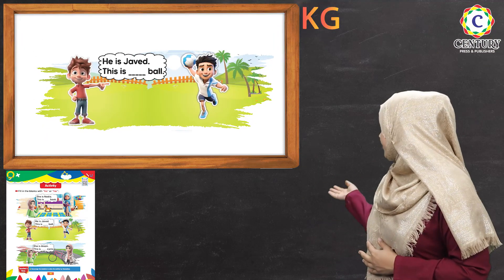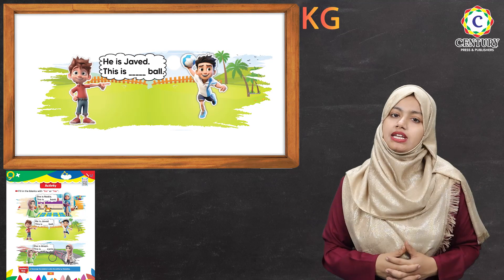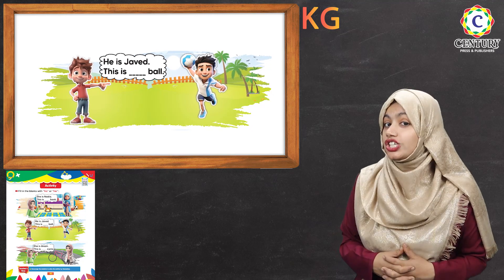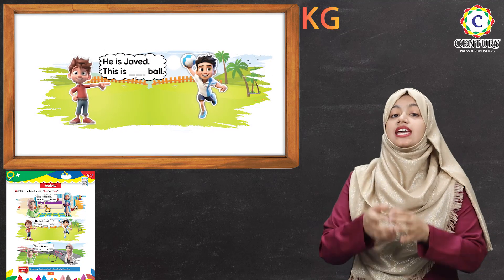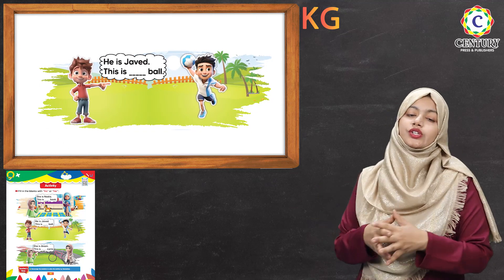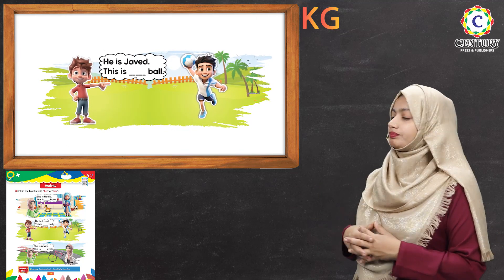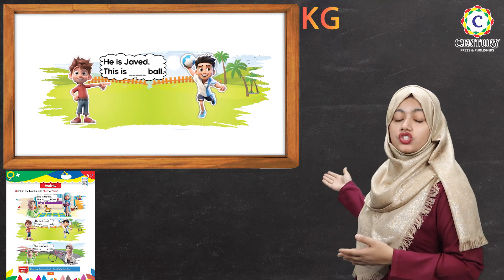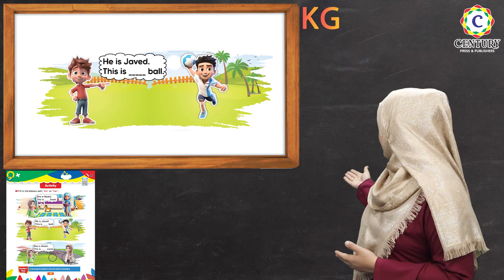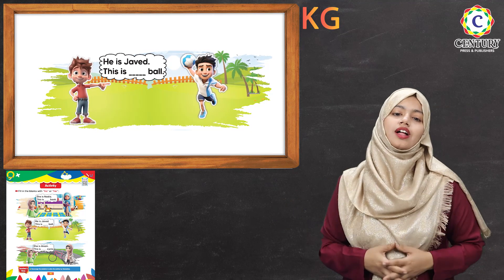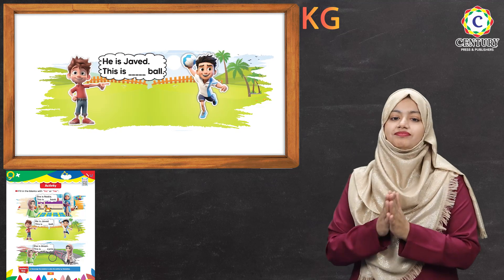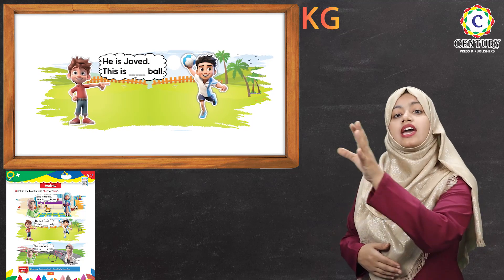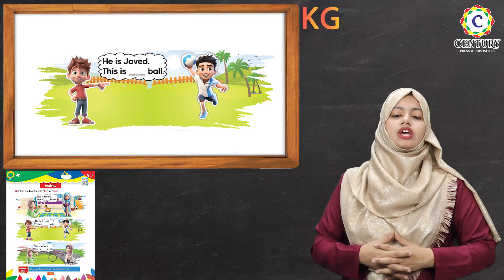Now you can see two other boys. Who can tell me what we will use with the boy? We will use his with a boy. Let's see what the sentence is saying. He is Javed. This is his ball. Very good. You can see a ball here, so the other boy is saying: this is his ball.